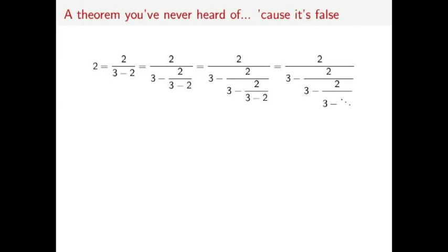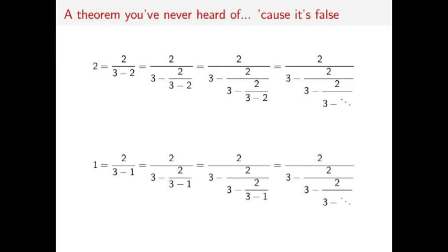Likewise, we also have that 1 is equal to 2 divided by 3 minus 1. Since this is true, we can replace the 1 in the denominator with 2 divided by 3 minus 1, and keep repeating and repeating and repeating until we get this. Since 1 and 2 are equal to the same infinitely nested fraction, they are, in fact, equal.